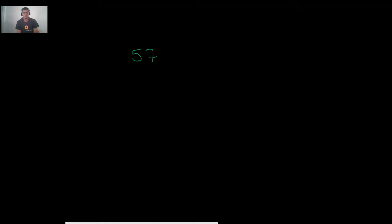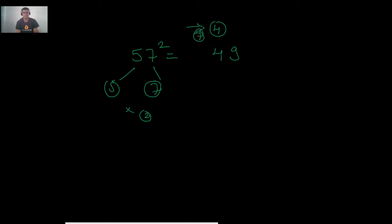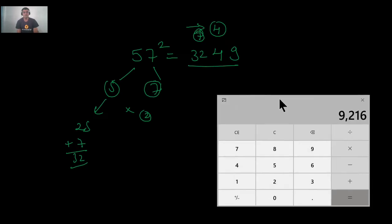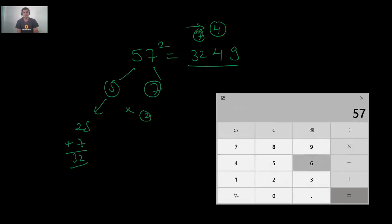Let us find 57². The two parts are a = 5, b = 7. Step 1: 7² = 49; write 9, carry 4. Step 2: 2 × 5 × 7 = 70; add 4 to get 74; write 4, carry 7. Step 3: 5² = 25; add 7 to get 32. Result: 3249. Verification: 57 × 57 = 3249. This hardly takes a few seconds.